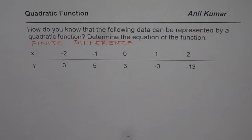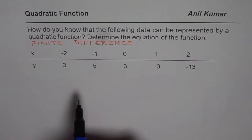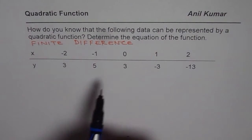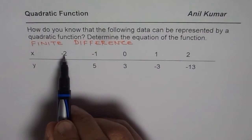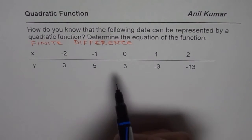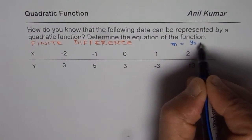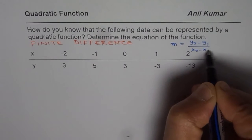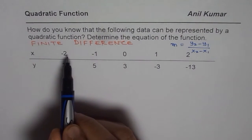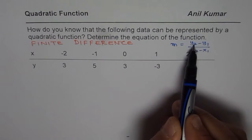What is finite difference? We are given a table of values where for x values we have corresponding y values. As you notice, the x values are increasing by 1, and for them we have corresponding y values. Finite difference means that for a constant difference of x value, we find the difference in y value. Those of you who have done lines know about slope — m equals y2 minus y1 over x2 minus x1. Since the x differences are all 1, we only consider the numerator part, which is y2 minus y1.